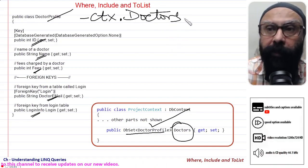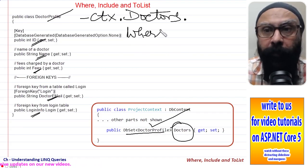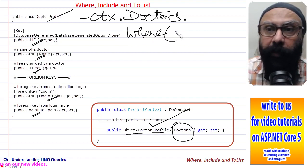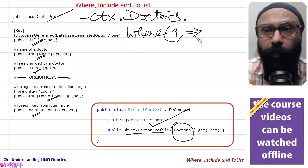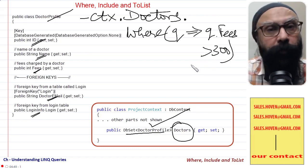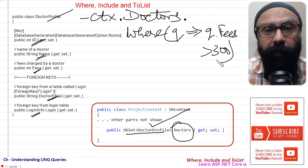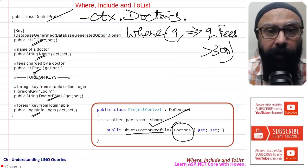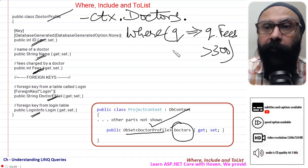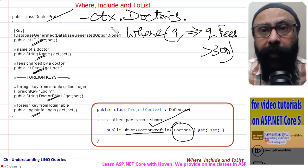Then I will write context dot, this property Doctors, and this gives me access to the whole table. In this, let us suppose I want to search for various records dot Where. This query condition, it goes to q dot Fees more than 300. Let us suppose we want to search for all records for which the Fees property is more than 300.